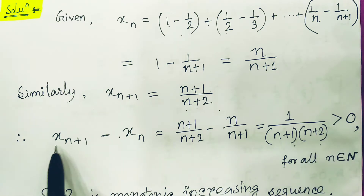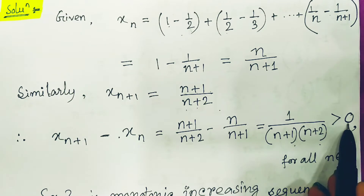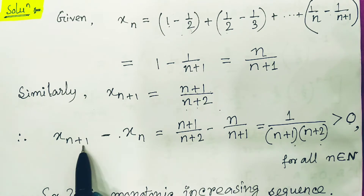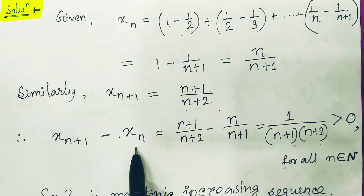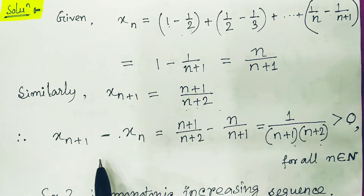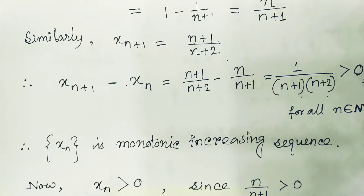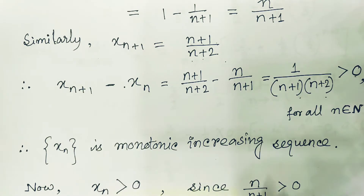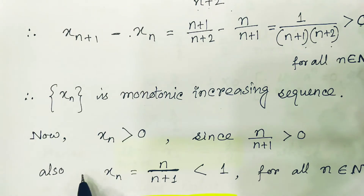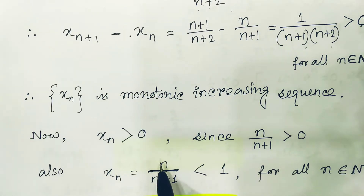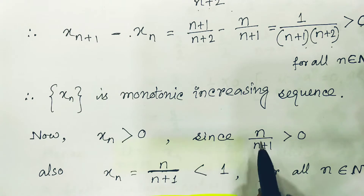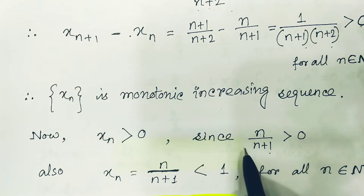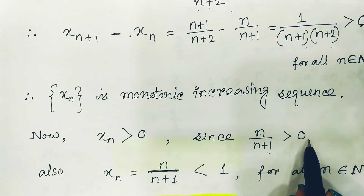Since n is positive, this entire term 1/((n+1)·(n+2)) is greater than 0. This means xn+1 is greater than xn, so the given sequence is monotonically increasing because each (n+1)th term is greater than its previous term. Also, since xn = n/(n+1) and n is a natural number, xn is always greater than 0.